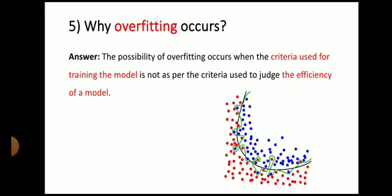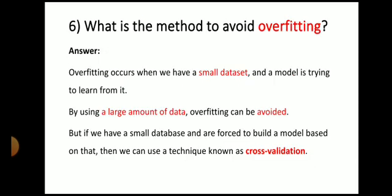Next question: why does overfitting occur? The answer is, the possibility of overfitting occurs when the criteria used for training the model is not as per the criteria used to judge the efficiency of the model. Next question: what is the method to avoid overfitting? The answer is, overfitting occurs when we have a small data set and the model is trying to learn from it. By using a large amount of data, overfitting can be avoided. But if we have a small data set and are forced to build a model based on that, then we can use a technique known as cross-validation, and through cross-validation, we can avoid overfitting.